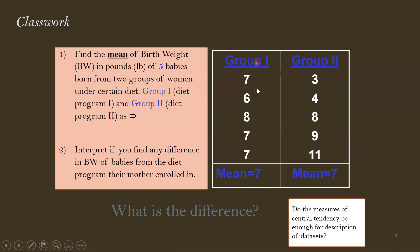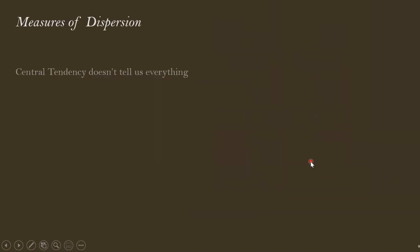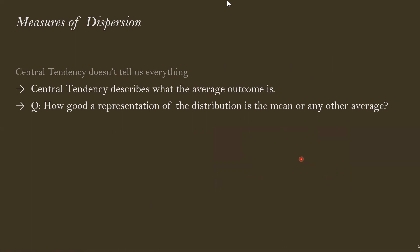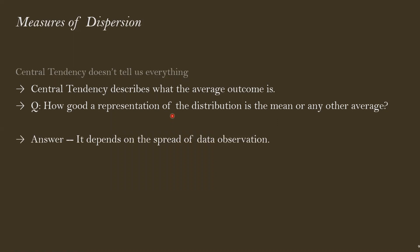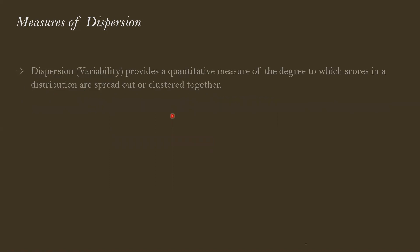We have to actually work out the variation in the data values, which is where the measure of dispersion comes in. Central tendency does not tell us everything — it only describes what the average outcome is. How good a representation the mean is depends on the spread of the data observations. So we work out a single quantitative measure which can describe how the data are spread out or clustered together.